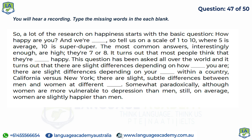A lot of research on happiness starts with the basic question: 'How happy are you?' On a scale of 1 to 10, with 5 as average and 10 as the highest, the most common answers are 7 or 8 — most people think they are pretty happy. This question has been asked all over the world, and there are slight differences depending on age, location within a country, and gender. Somewhat paradoxically, although women are more vulnerable to depression than men, on average women are slightly happier than men.